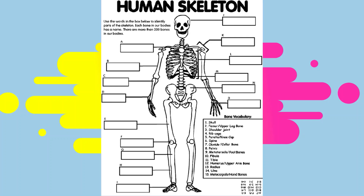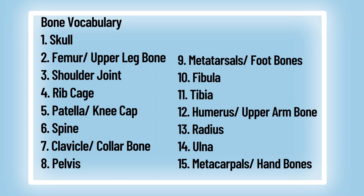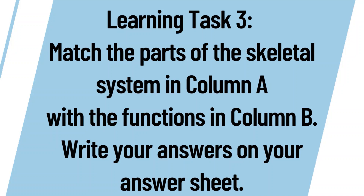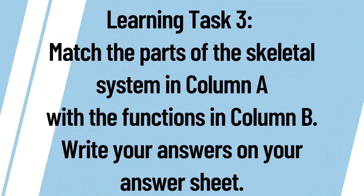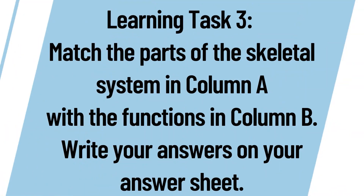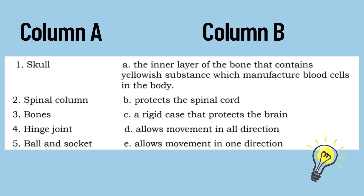The bone vocabulary words include: skull, femur or upper leg bone, shoulder joint, ribcage, patella or kneecap, spine, clavicle or collarbone, pelvis, metatarsals, fibula, tibia, humerus, radius, ulna, and metacarpals. For Learning Task 3: match the parts of the skeletal system in Column A with the functions in Column B. Column A includes: skull, spinal column, bones, hinge joint, and ball-and-socket joint.